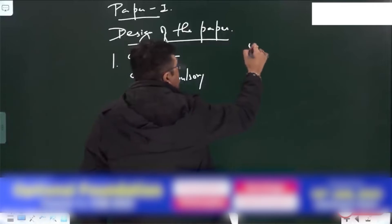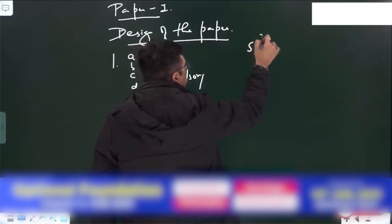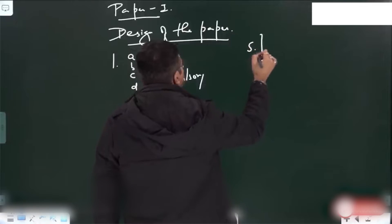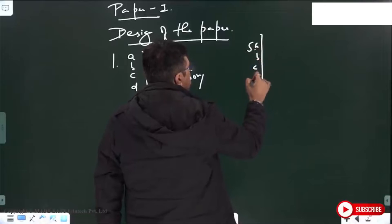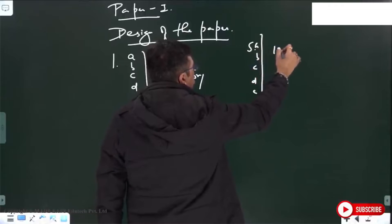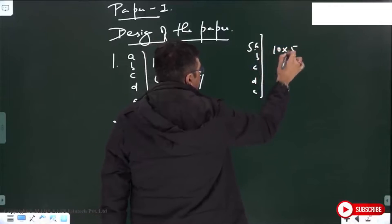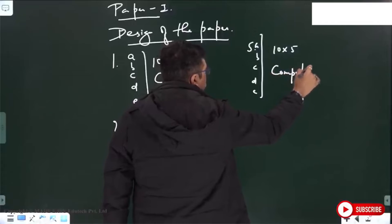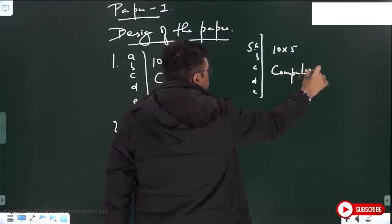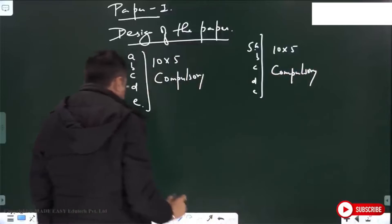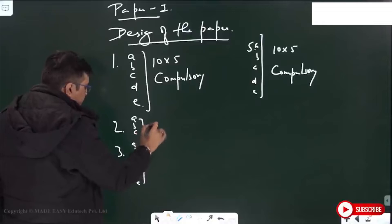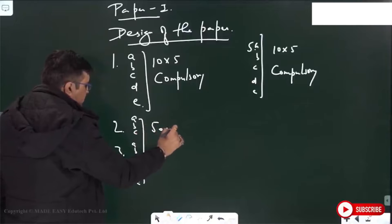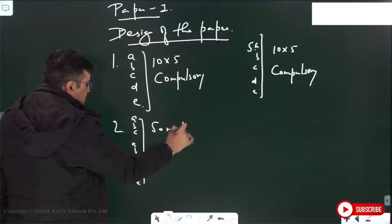Similarly, question five will again have parts A, B, C, D, and E — ten marks each, five parts — and all of this will be compulsory. These compulsory parts are 50 marks each.